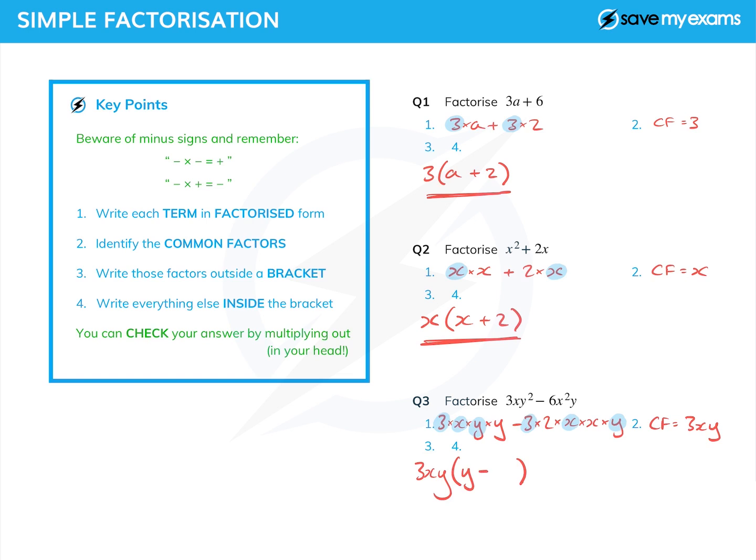There we go, that should be my answer. Let's just check it. If I multiply 3xy by y, I do get 3xy². And if I multiply 3xy by -2x...